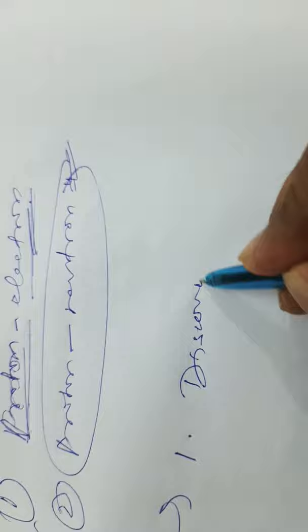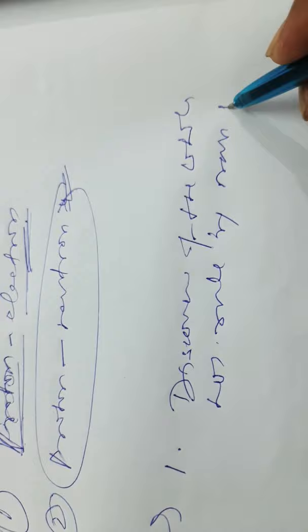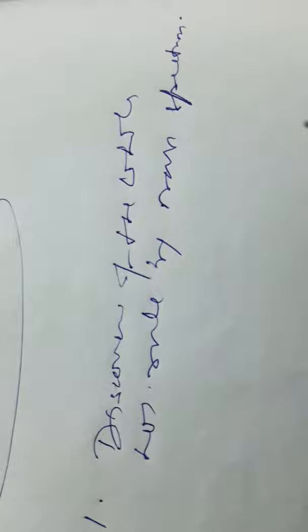Number one is the discovery of the whole number rule by mass spectrometry. This justified that different nuclei are built up from the same simple nuclei of hydrogen, or to some extent we can say proton.